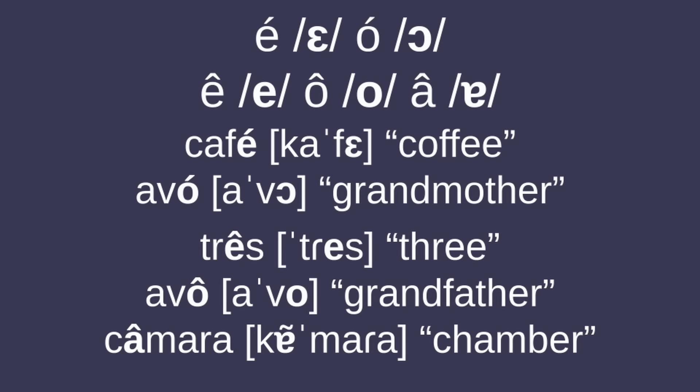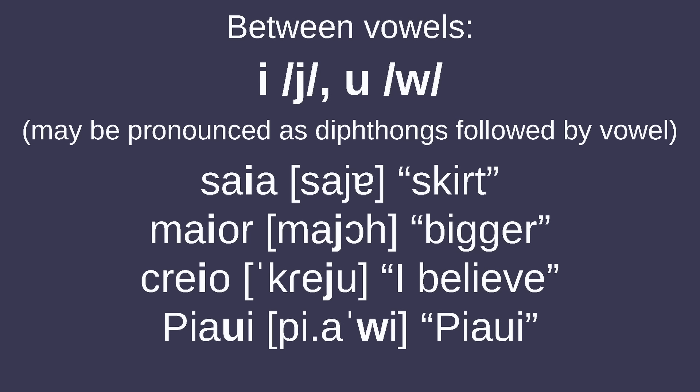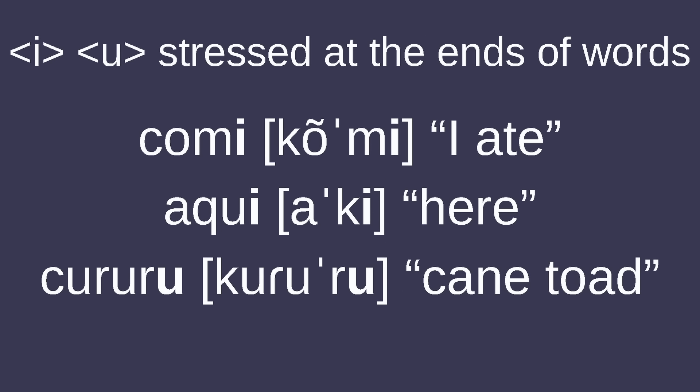SH is represented with CH and X, the latter of which may also represent /s/, /z/, /ks/, or /gz/. The letter S is pronounced /z/ between vowels, and SS is used to indicate /s/ in this context. The /s/ phoneme is also frequently written with Z or cedilla in Portuguese. Acute accents are used to indicate open mid vowels /a/ and /ɔ/, while circumflexes are used for closed mid vowels /e/ and /o/, as well as /ɐ̃/. Intervocalic E and U are pronounced /j/ and /w/, and at the ends of words are stressed /e/ and /u/ respectively.